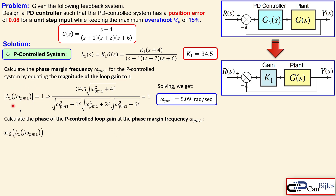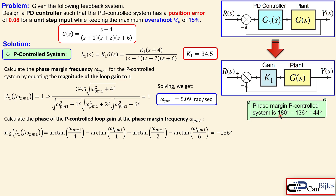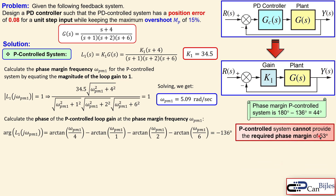The phase of the loop transfer function at that frequency is the sum of the numerator phase minus the denominator contributions — three arctangent terms from the three poles. Substituting omega_pm = 5.09 gives −136 degrees. The phase margin is then 180 − 136 = 44 degrees, but we need 53 degrees, so the P controller cannot provide the required phase margin.